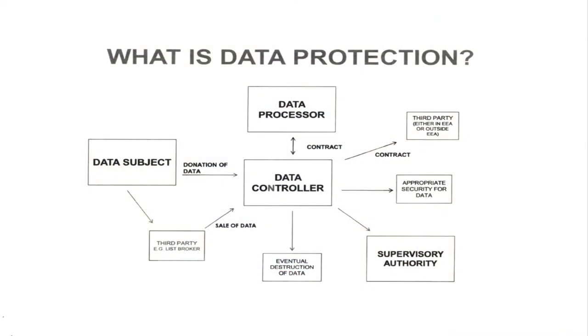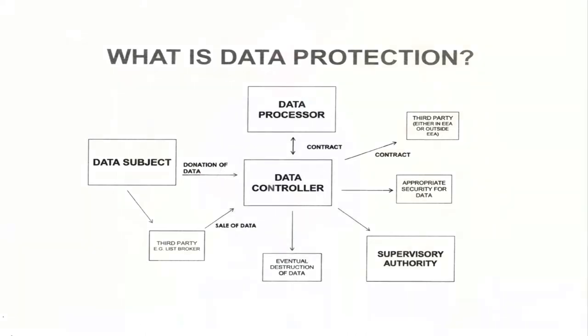In the notes I've handed out there is a chart called 'What is data protection?' Some people find it difficult to understand what we're actually talking about. On the left in the middle is something labelled 'data subject.' Data protection is about information about living individuals — and that applies to everyone in the world. A Bushman in the Kalahari is protected by GDPR, but only where the controller is actually within Europe. The data subject is the individual about whom somebody else holds information, on a computer or in written records.